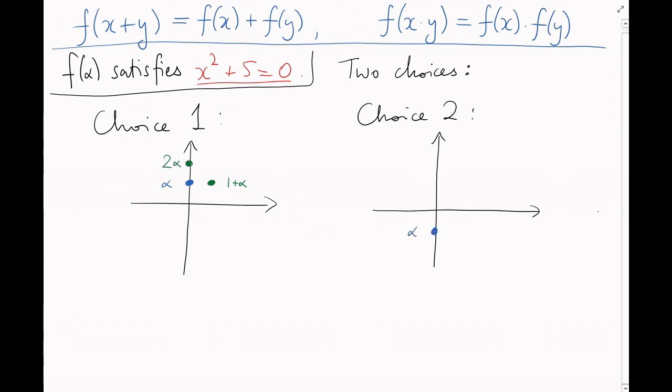Whereas if we make this choice, then f sends 1 plus alpha here, and it sends 2 times alpha here. This isn't much more exciting, because in this case the two embeddings are just symmetric copies of each other under complex conjugation.